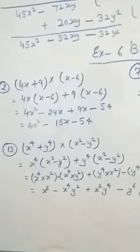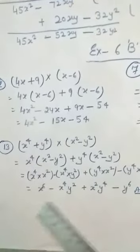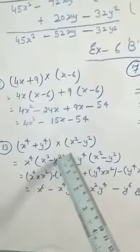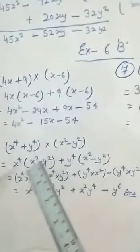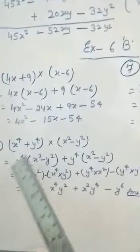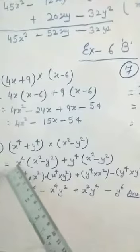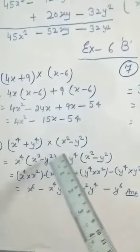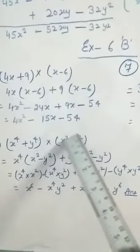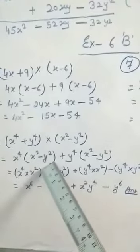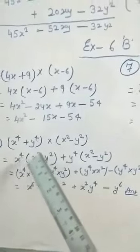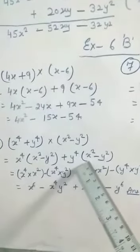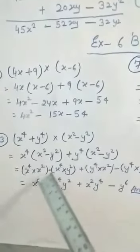Now question number 13: x to the power 4 plus y to the power 4, multiplied by x squared minus y squared. First take x to the power 4 and multiply by the other polynomial, x squared minus y squared. Again, plus y to the power 4, multiplied by x squared minus y squared.